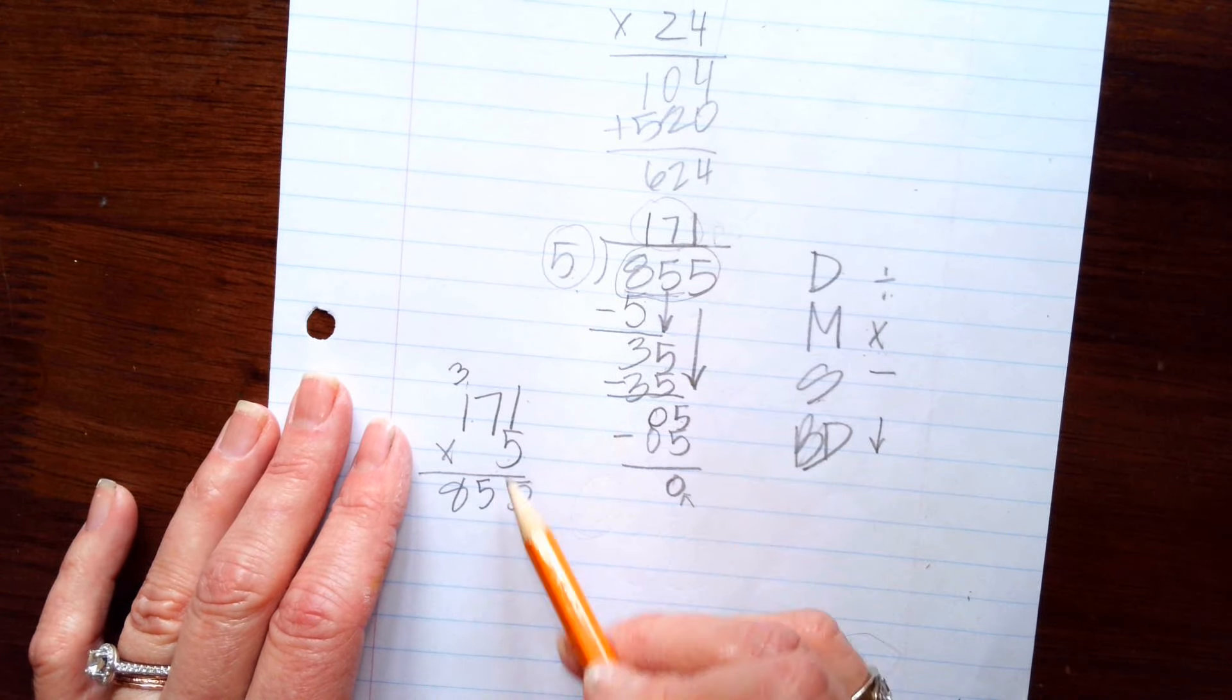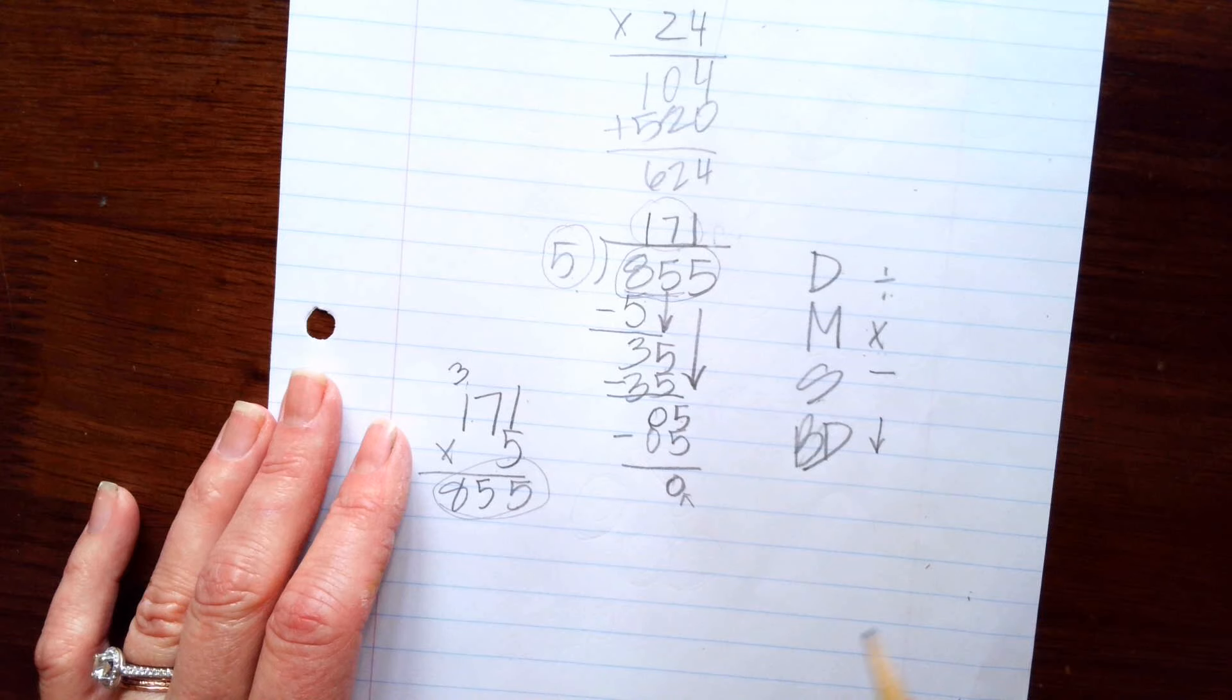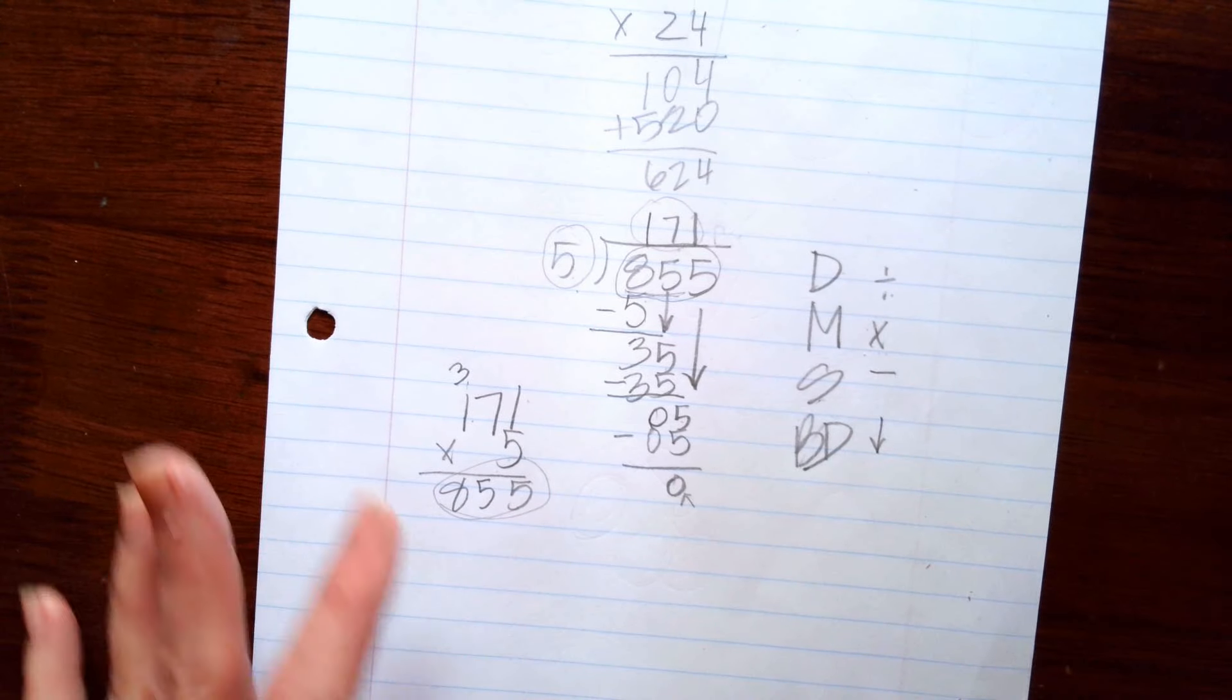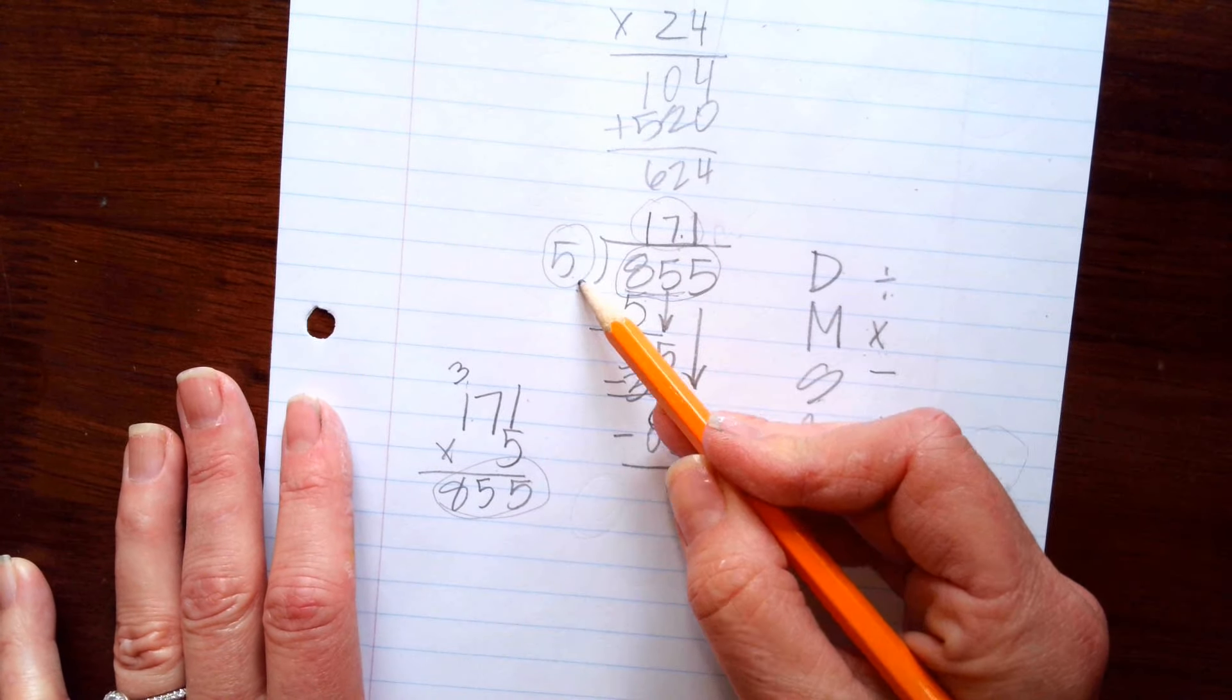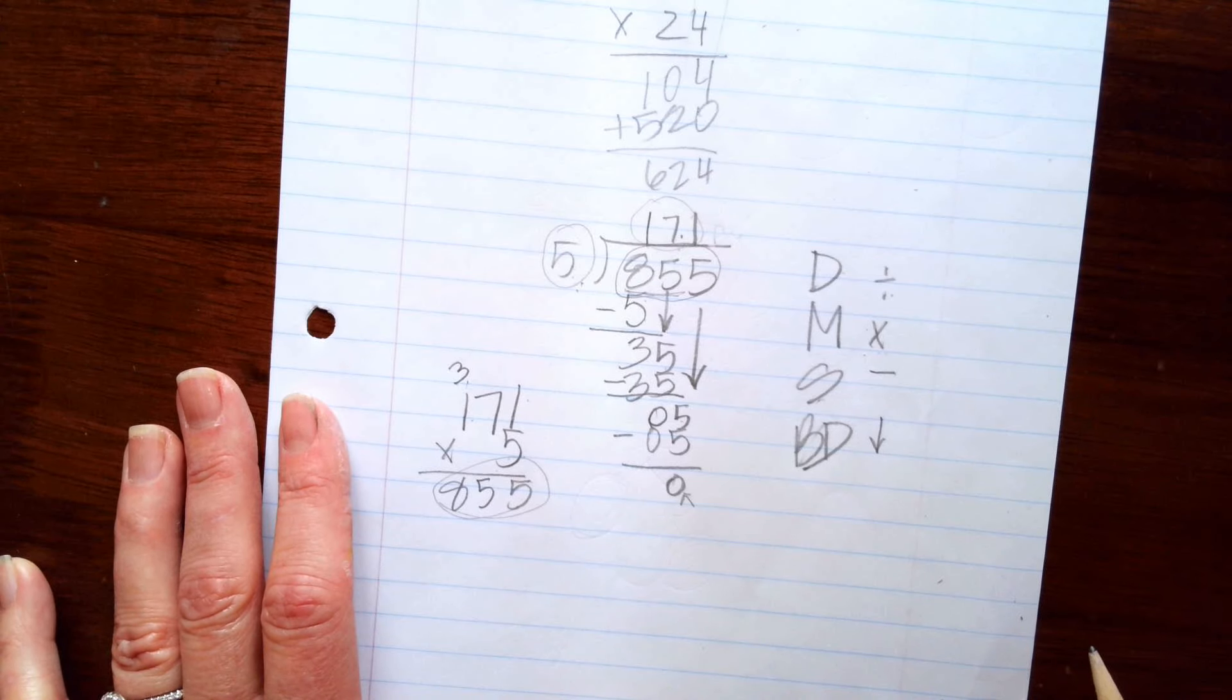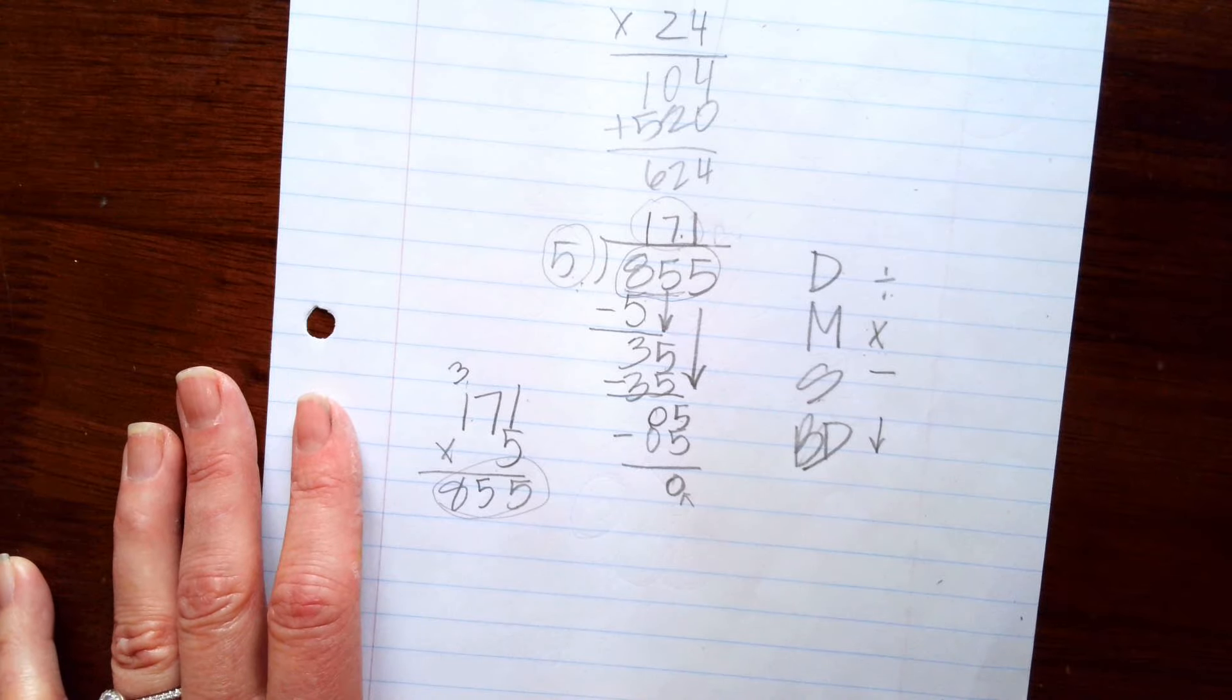And did we get the same answer? Yes. If we do not get the same answer when we multiply this and this together, that means we did something wrong, and then we have to redo it again. Do you have any questions about that? No.